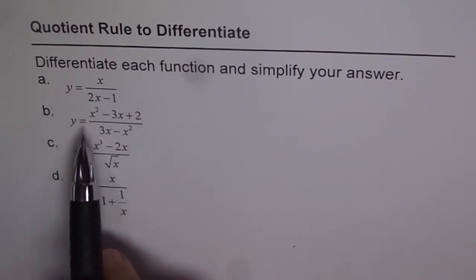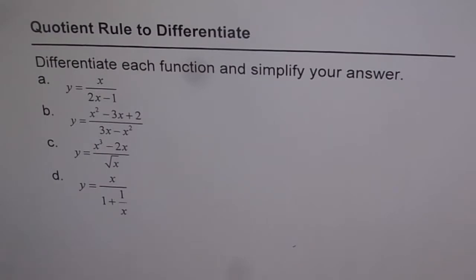So it's y equals to x over 2x minus 1. We have y equals to x squared minus 3x plus 2 divided by 3x minus x squared. And y equals to x cubed minus 2x over square root of x and y equals to x over 1 plus 1 over x.